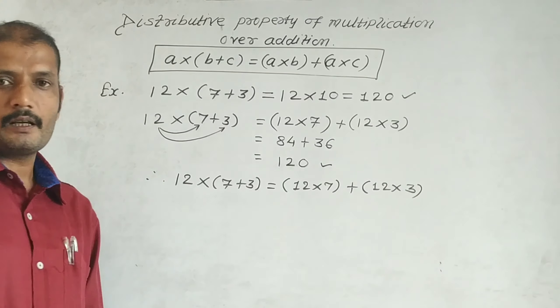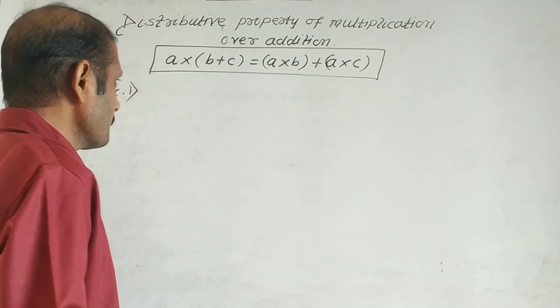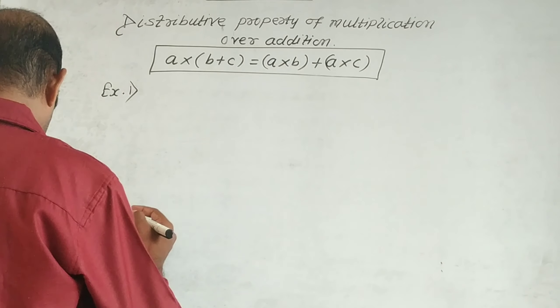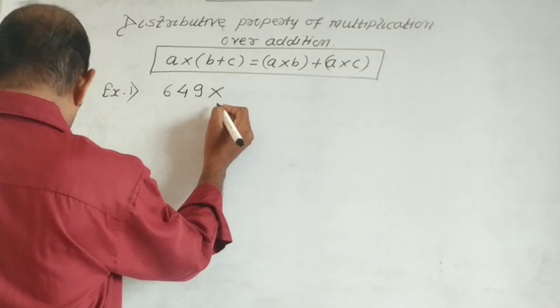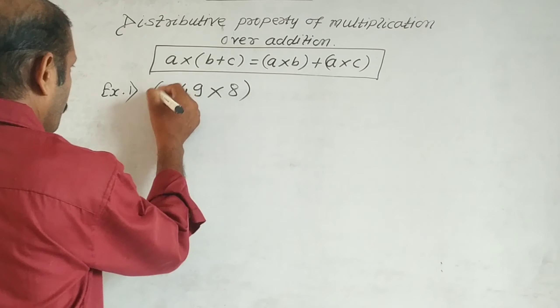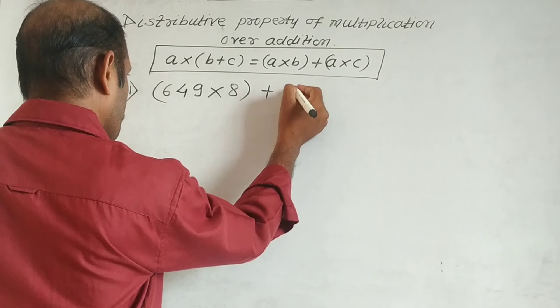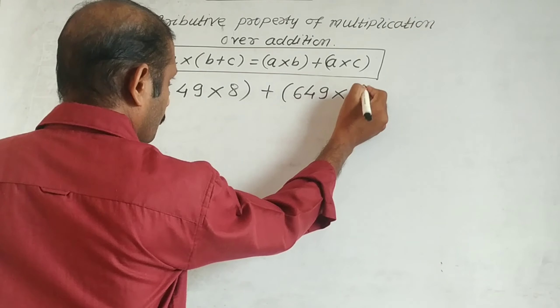First example: (649 × 8) + (649 × 2). This example, we can use the distributive property of multiplication over addition to solve.